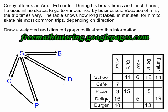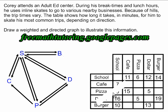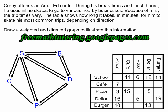Corey goes from the dollar store to the pizza place, but he also goes from the pizza place to the dollar store, so I have to show arrows for that trip in both directions. He goes from the burger place to the dollar store and from the dollar store to the burger place, so I need a double arrow going between the burger place and the dollar store.